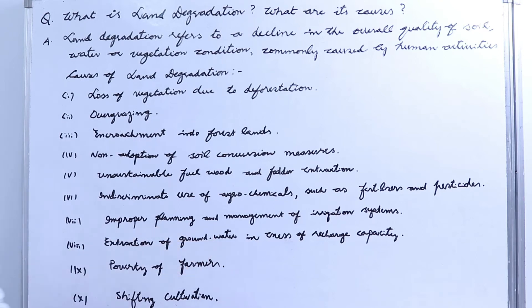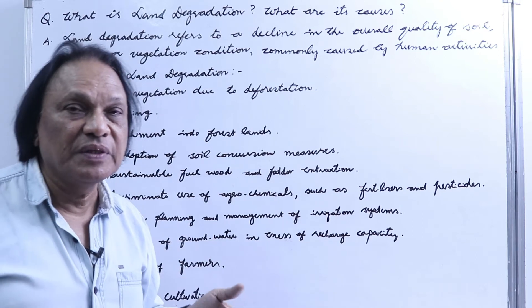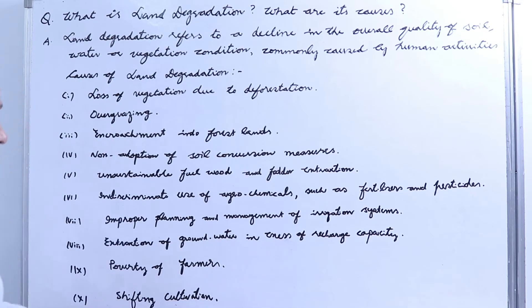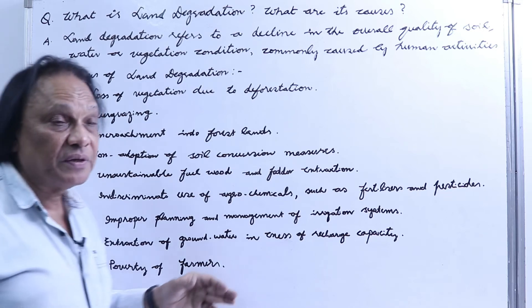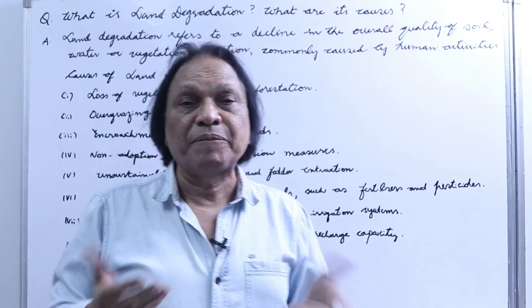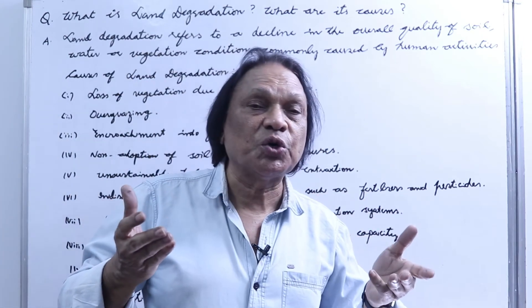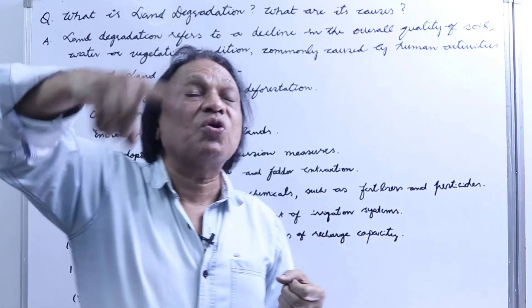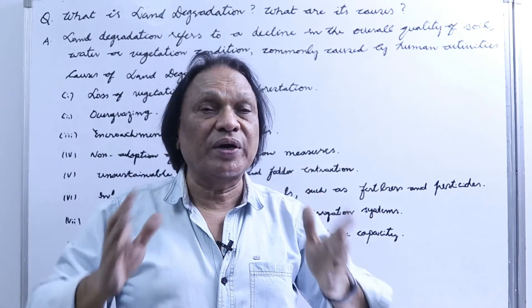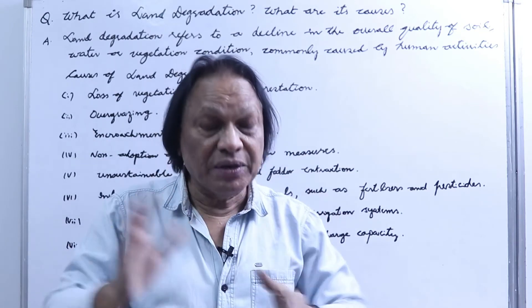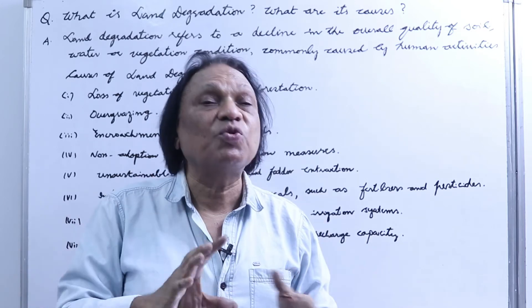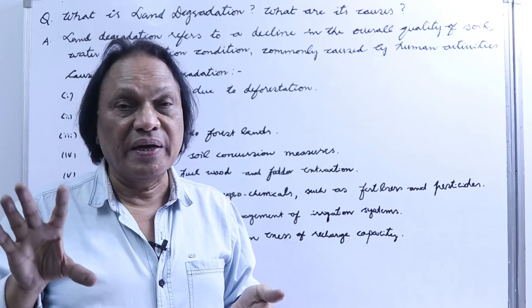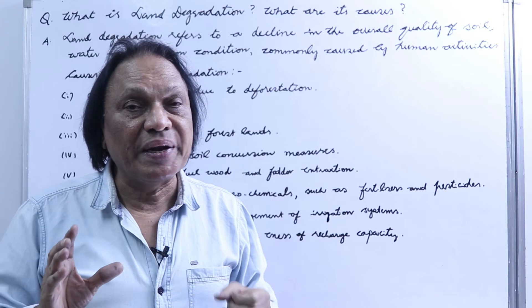Improper planning and management of irrigation systems is another cause — there is no proper planning. Also, extraction of groundwater in excess of recharge capacity. Farmers are poor and mostly illiterate, so they don't have proper planning. Moreover, there is crop rotation — if you go on rotating and changing the crops, the soil nutrients of the land remain constant. That has not been done properly, and that has led to land degradation.